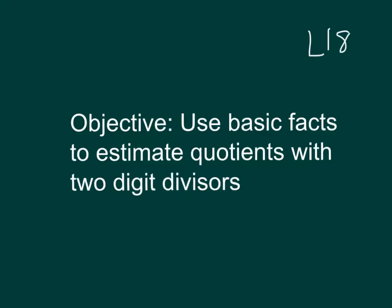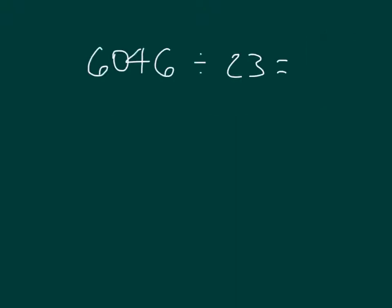The objective within this lesson is to use basic facts to estimate quotients with two-digit divisors. 6046 divided by 23, and again we're looking for an estimation here.